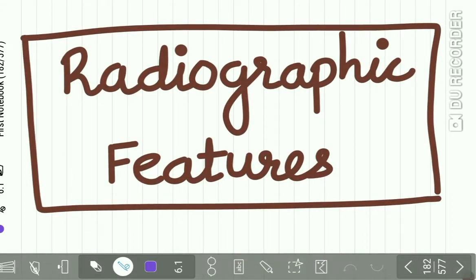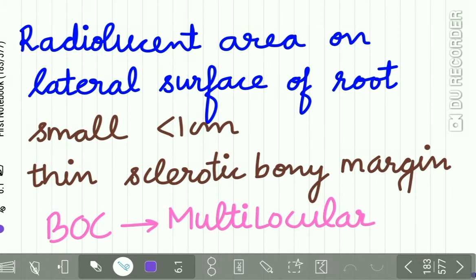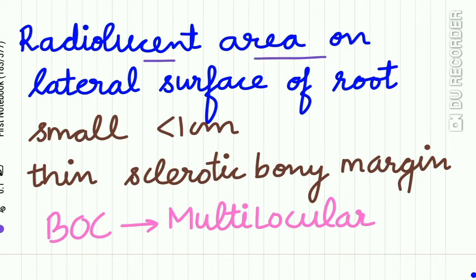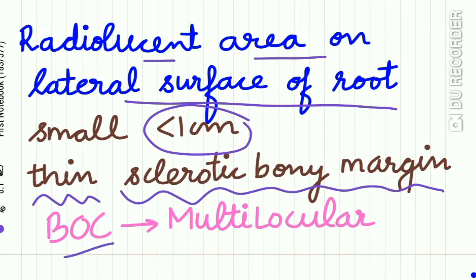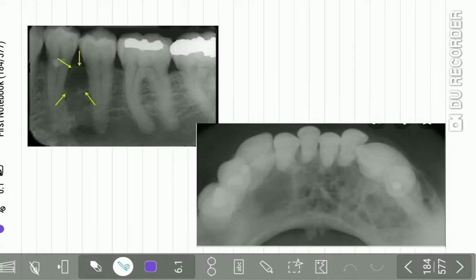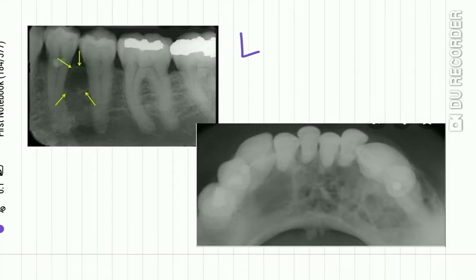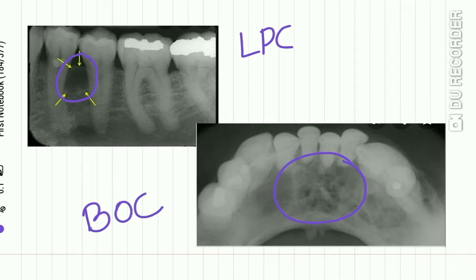The radiographic features: a radiolucent area is found on the lateral surface of the root, less than 1 cm in size, surrounded by a thin sclerotic bony margin. The Botryoid Odontogenic Cyst is multilocular on radiographic examination. Here you can see the lateral periodontal cyst — unilocular — on the lateral surface of the tooth, while this image shows a multilocular Botryoid Odontogenic Cyst.